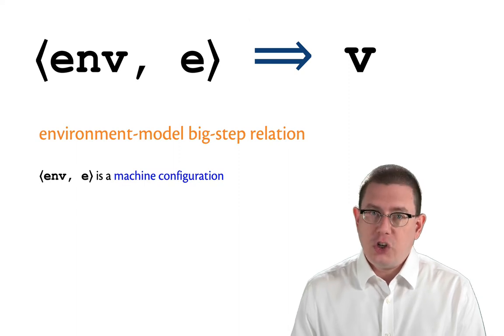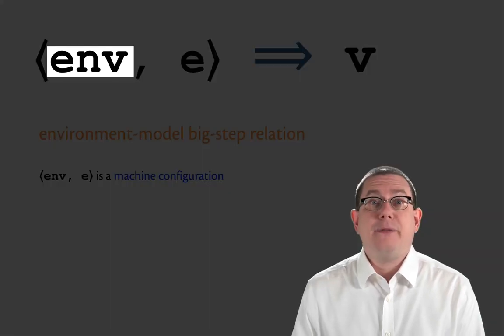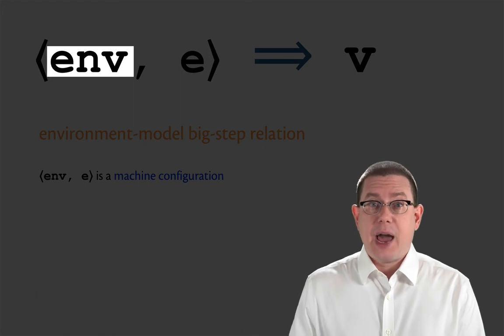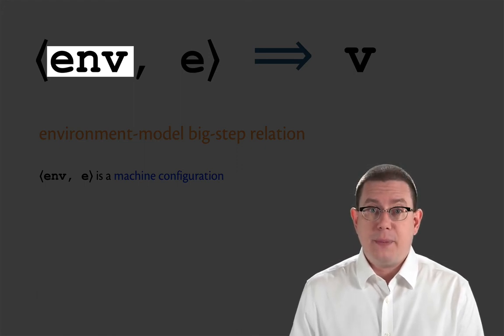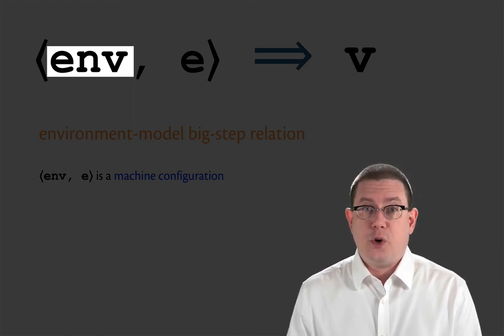But additionally now on the left hand side, we have an environment. That's that dynamic environment that maps variable names to their current values in the scope.